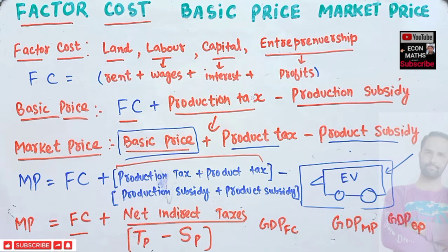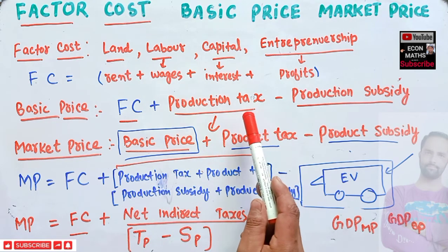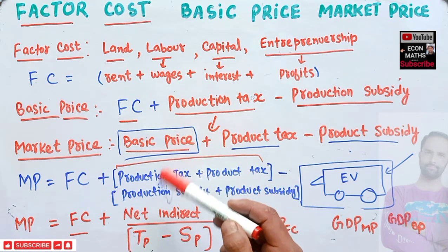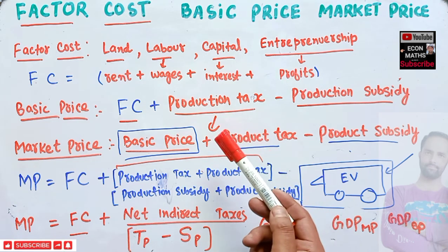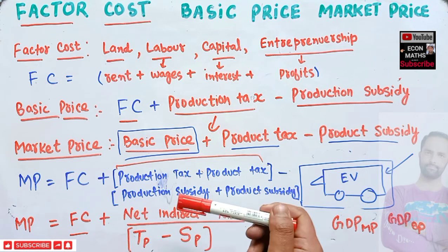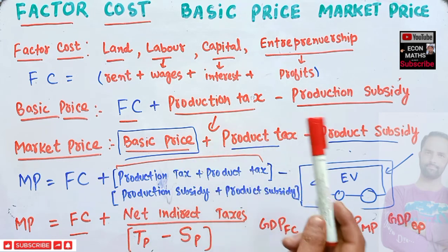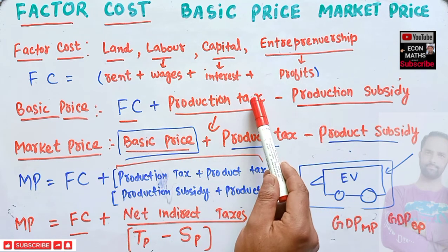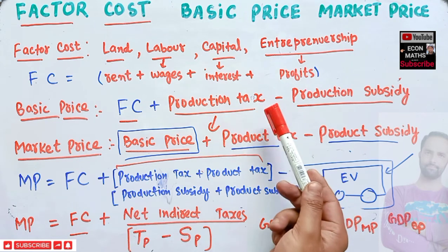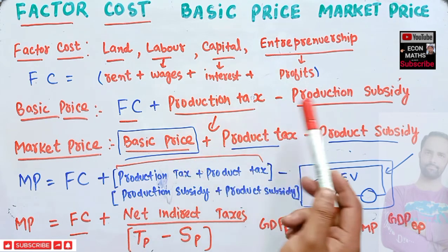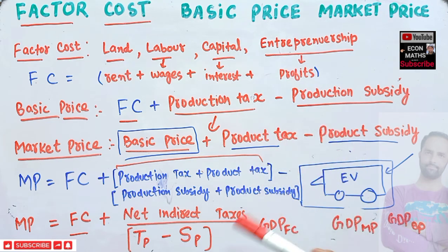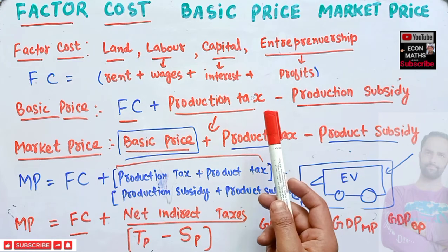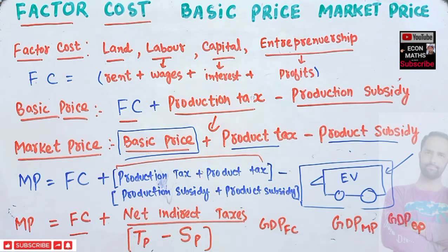The key distinction to remember: production tax is a tax on the process of production and is independent of the volume of actual production. Product tax is a tax on per-unit output and is dependent on the volume of production. I hope this video made things clear — thank you.